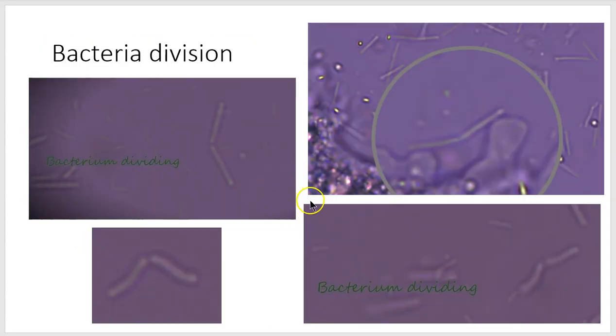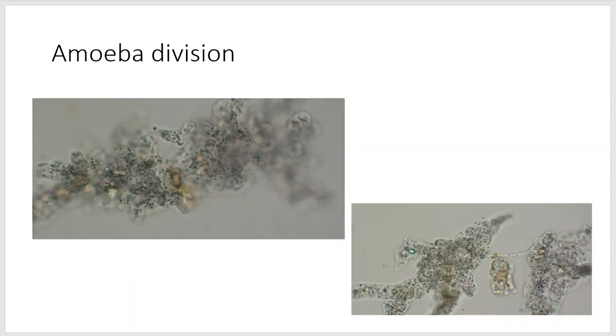Actually, before we get to amoeba, let's take a couple of other pictures here. Here we see some dividing bacteria again. And this kind of process of cell division is the principal way that bacteria reproduce. Now, amoeba also can reproduce in this fashion. They're going to grow and then they're going to duplicate their DNA and then split as you see in these pictures here.